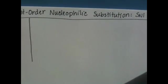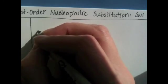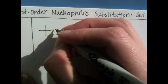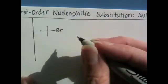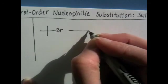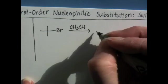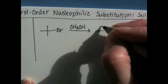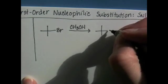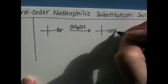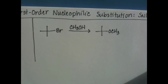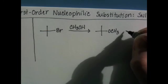So, for example, here's a reaction with tert-butyl bromide. Tert-butyl bromide will react with methanol, CH3OH, and it produces tert-butyl methoxide and HBr.